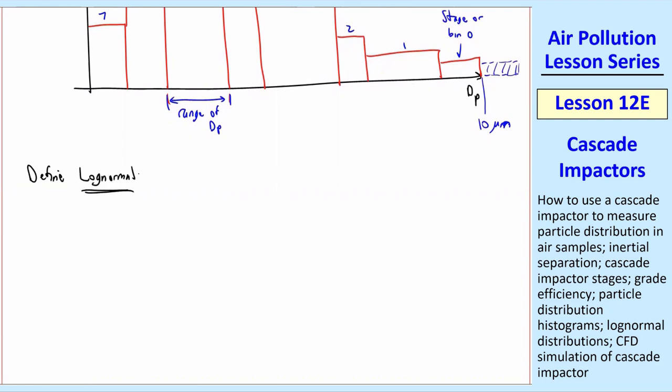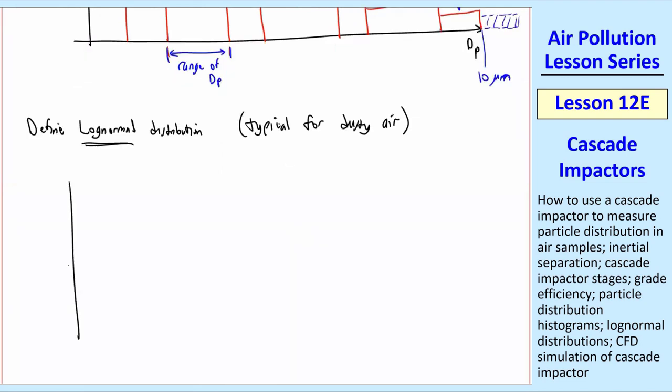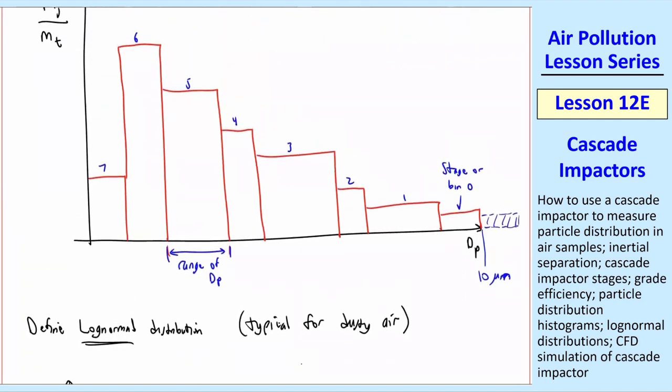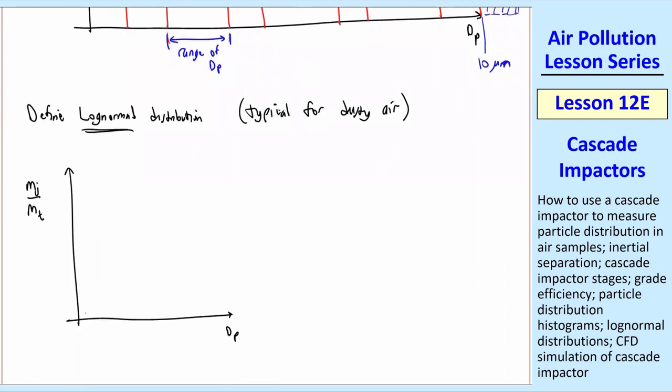Let's define a log normal distribution, which is typical for dusty air in some kind of a situation where you're measuring the dusty air. And all that means is this, if we have a distribution like I show here, and you make a smooth curve through it, it looks something like that. So let's just plot that here. It's very skewed to the left, and it has a big tail on the right. But if we plot the same data, MJ over MT, as a function of either log DP, or we put this on a log scale, we plot against log DP instead of DP.